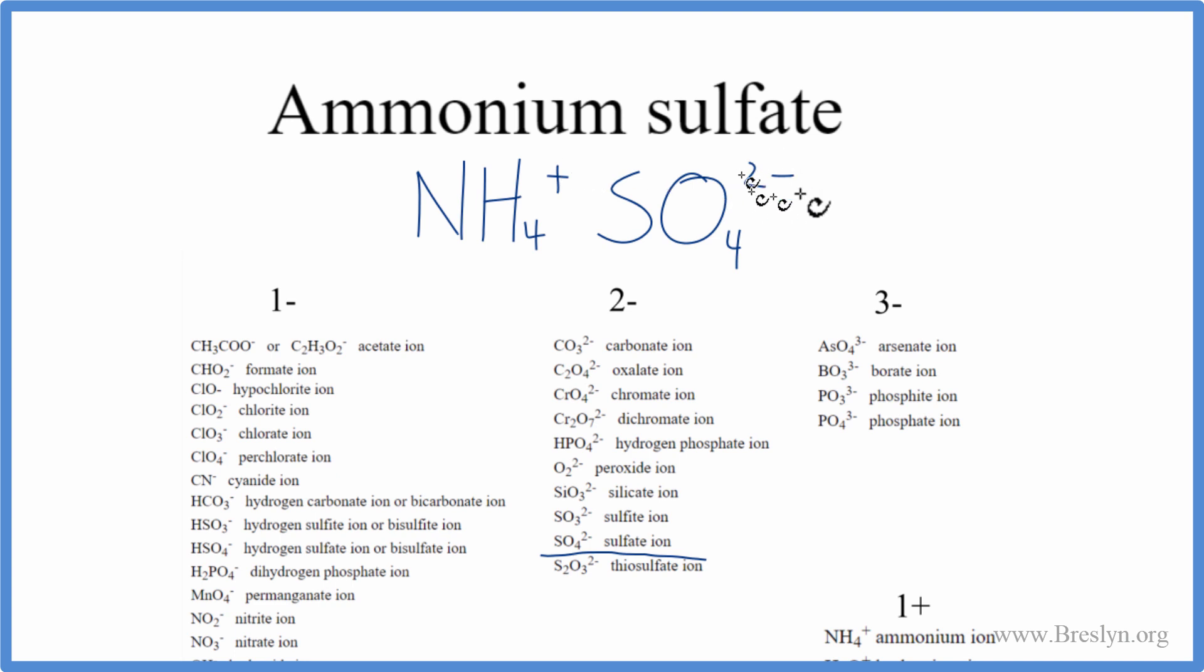Right now we have a 1+ and a 2-. To make them balance, what we can do is have two of these positives. So we'd put a parentheses around the NH4 and put a subscript of 2 out here. Now two times the 1+, that gives us 2+, and that would balance out the 2-. So this is the formula for ammonium sulfate.